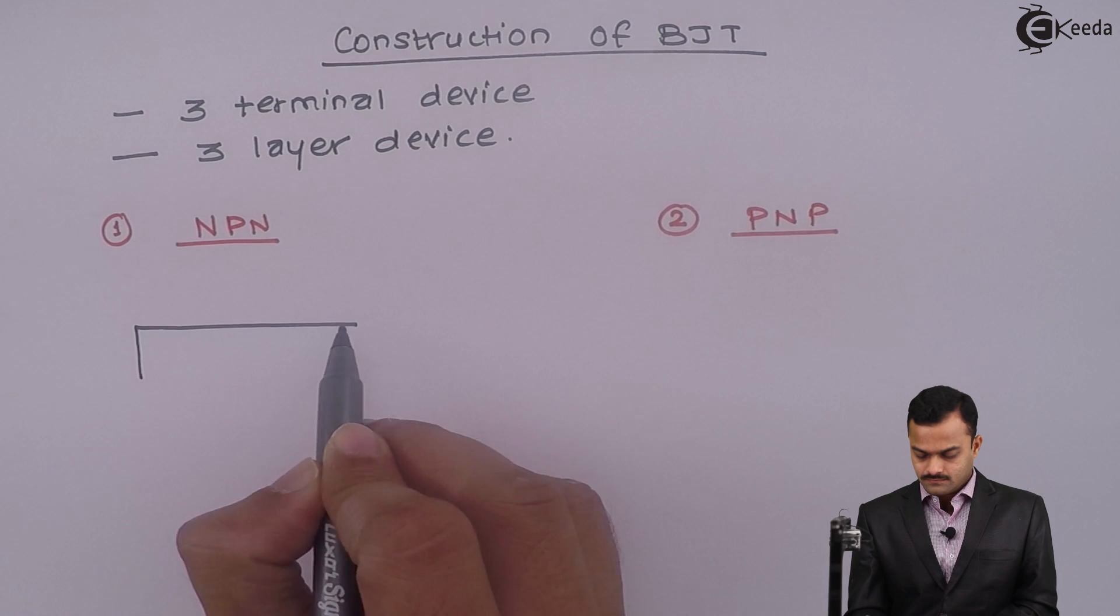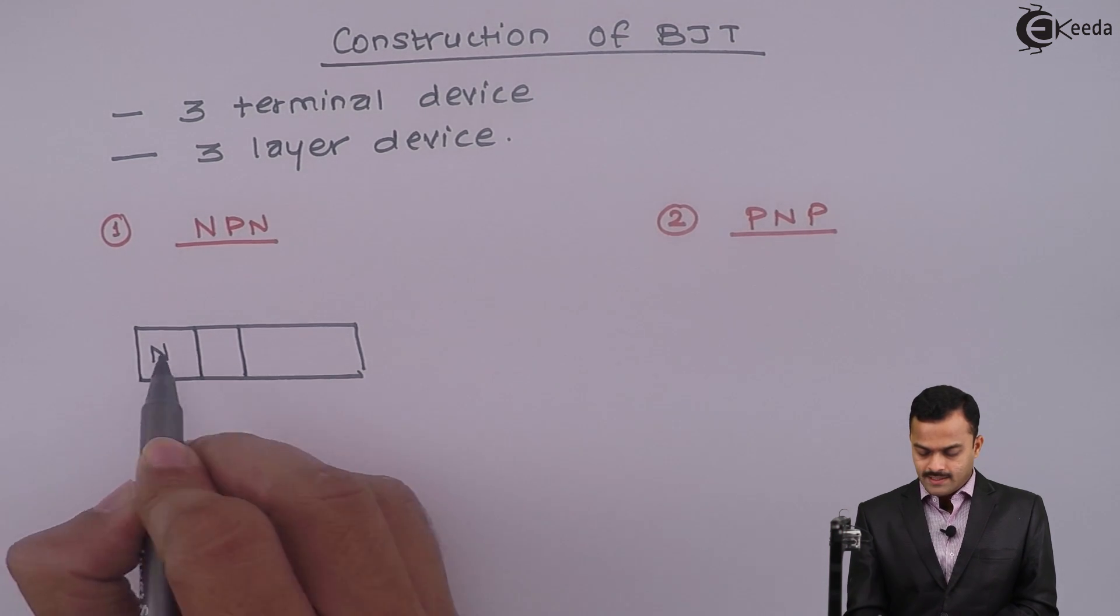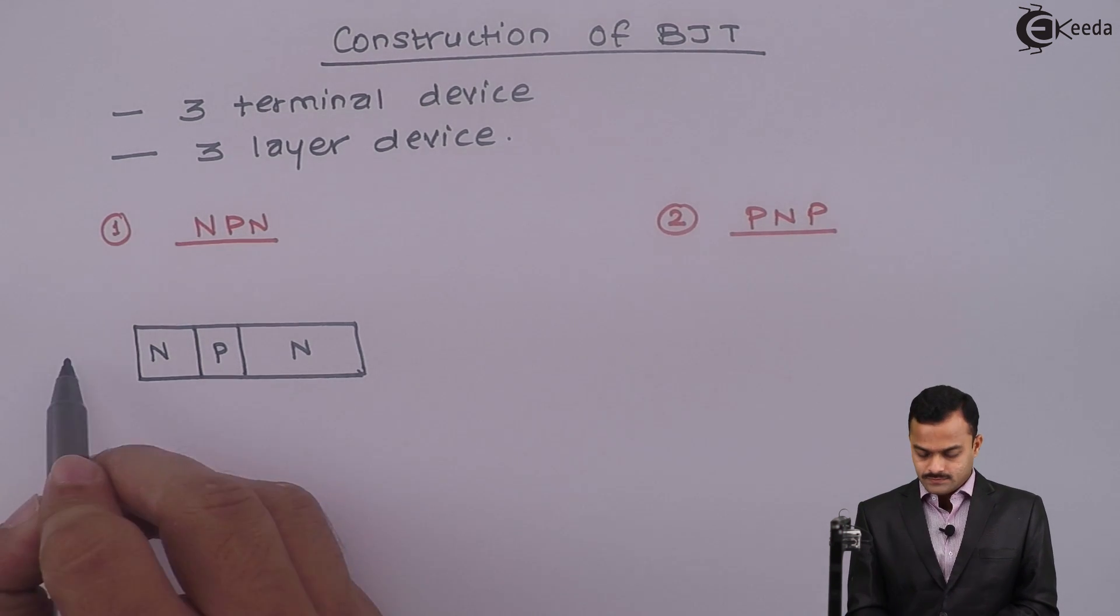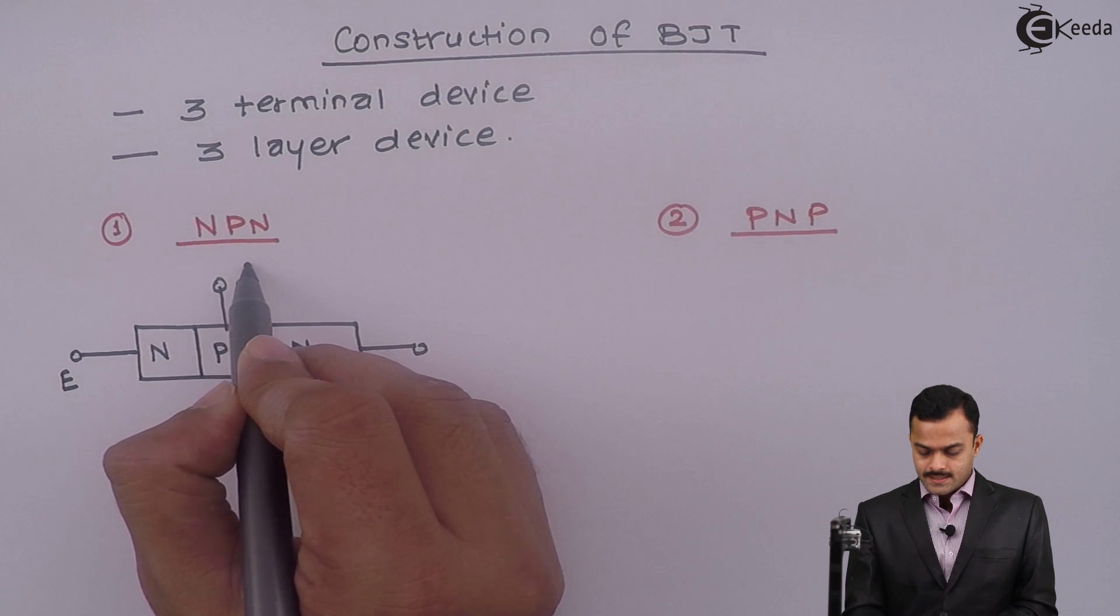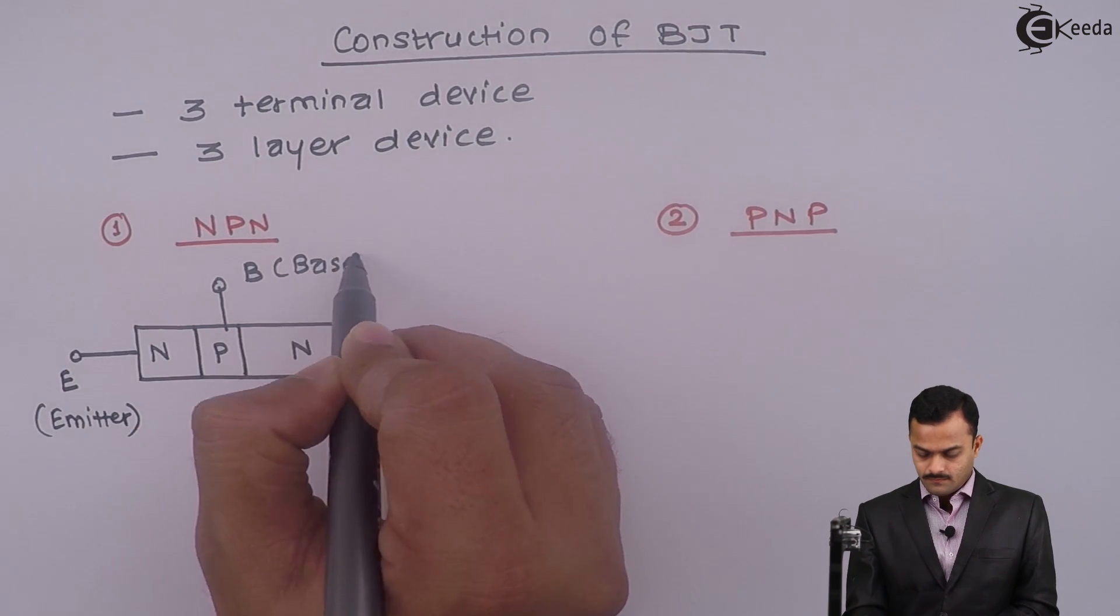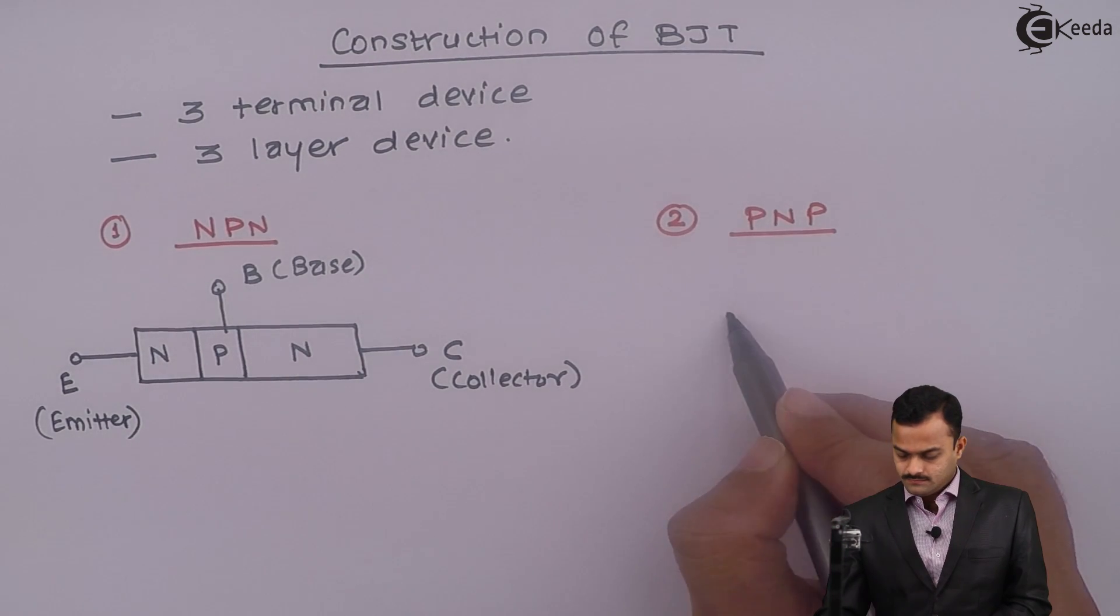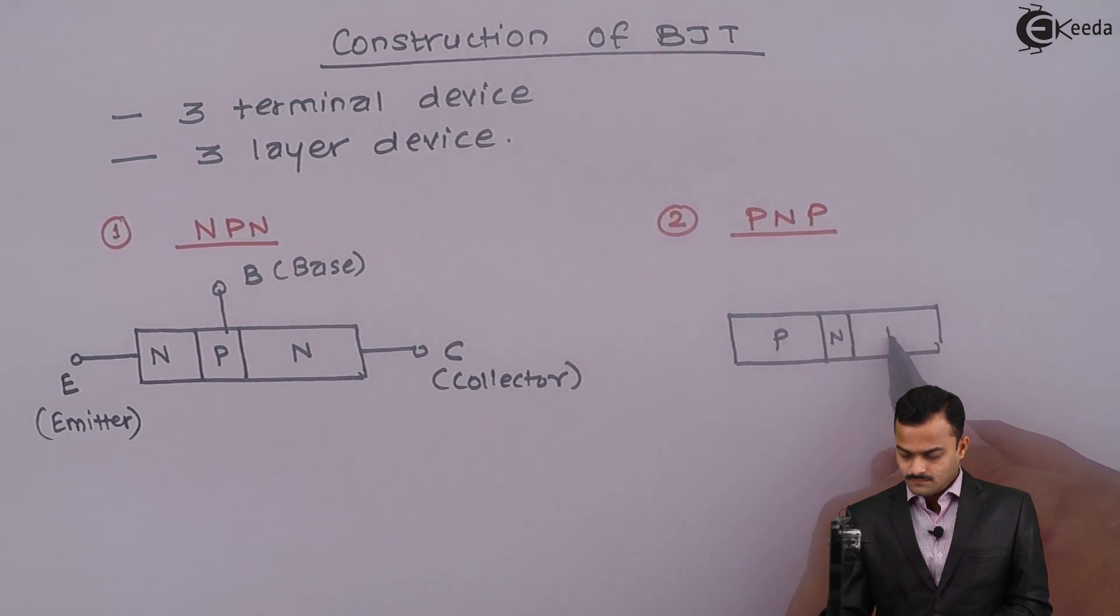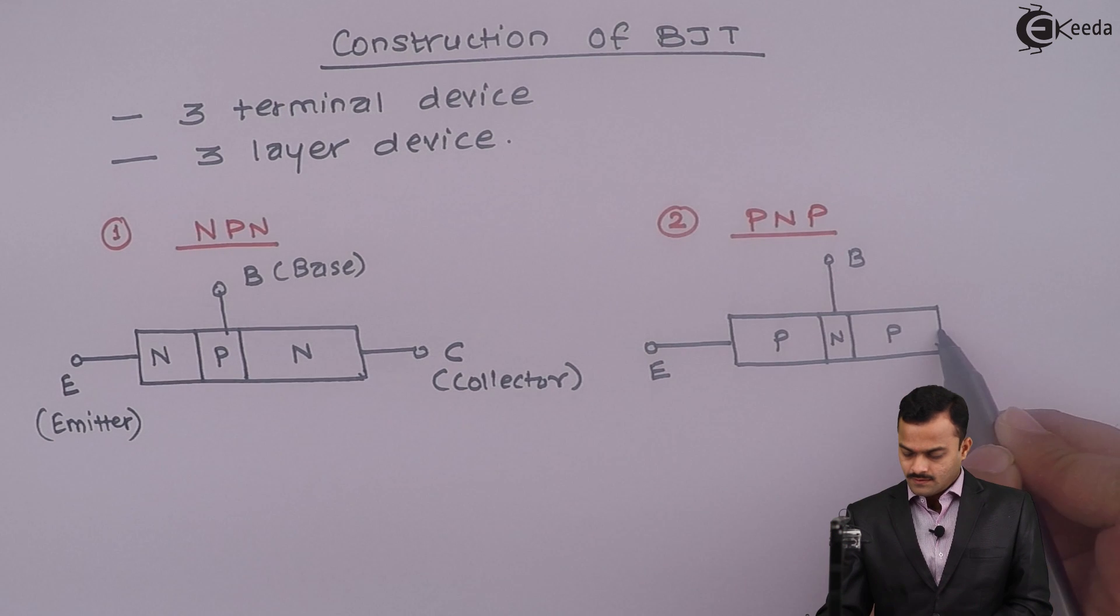In NPN transistor, the p-layer is sandwiched between two n-layers, and three terminals are taken out. Those three terminals are called emitter, base, and collector. For PNP, it will be similar. Again, three terminals are emitter, base, and collector.